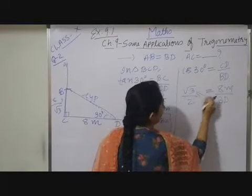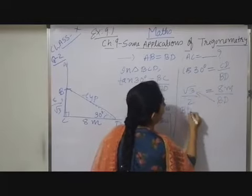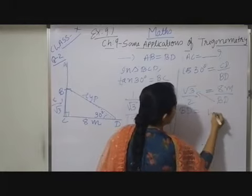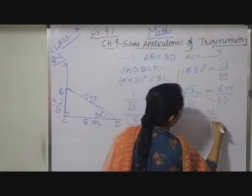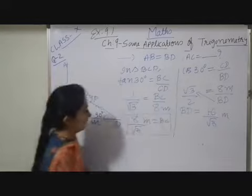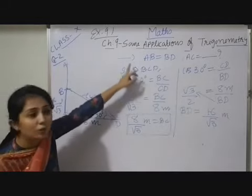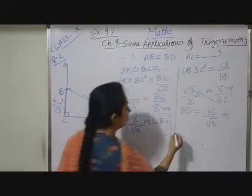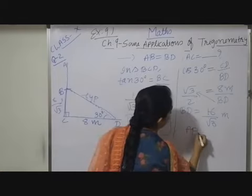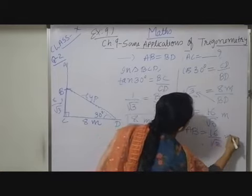Now here I will multiply and this value I will shift there. So BD is equal to 2 times 8 upon root 3, which is 16 upon root 3 meters. Now BD is equals to AB, so therefore AB is also equals to 16 upon root 3 meters.